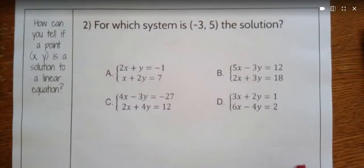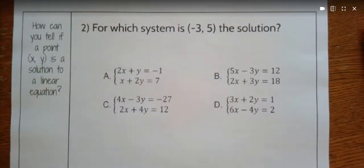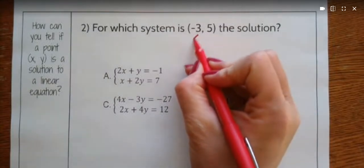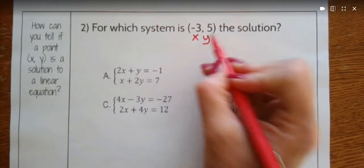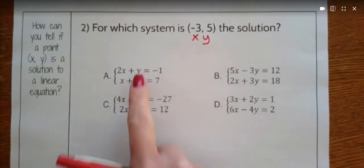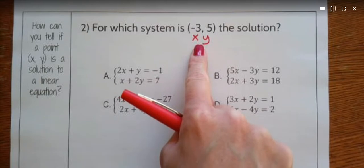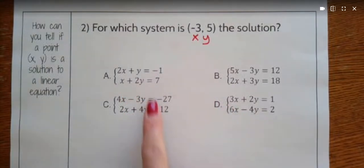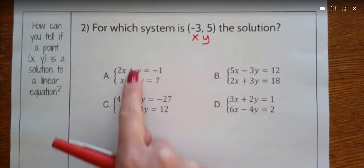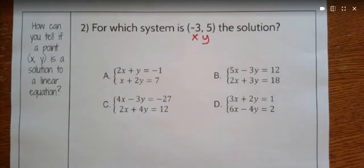This next question is asking something very similar, but here they're giving you the point. For which system is (−3, 5) the solution? We want to see which system this point is true for — in other words, if you graphed the system on a coordinate plane, would these two lines travel through that point?